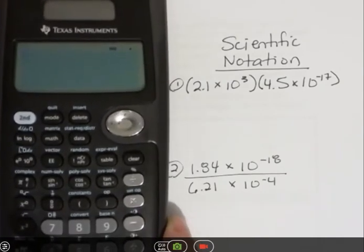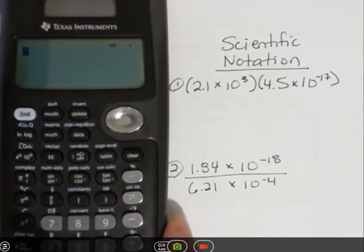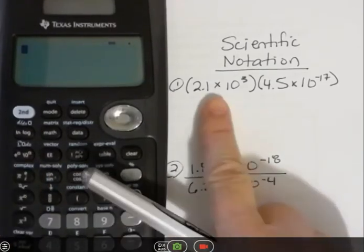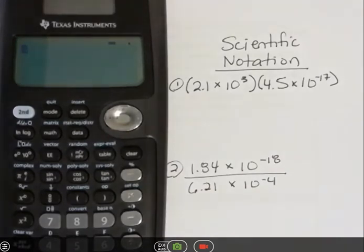And then for scientific notation, we're going to use the EE button. You can see it right here, and that is going to be what we enter to get it into the scientific notation mode in a calculator.